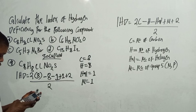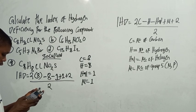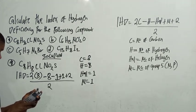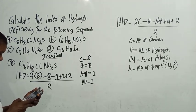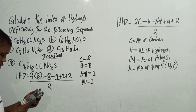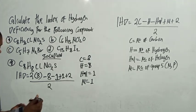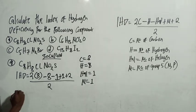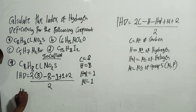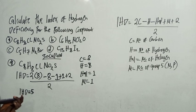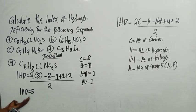So it's going to be: 2 times 1 (in brackets) minus 3, minus 1, plus 1, plus 2, all divided by 2. That gives IHD equals 0. Wait — let me recalculate. 2 times 8, minus 8, minus 1, plus 1, plus 2, over 2. So IHD equals 5.